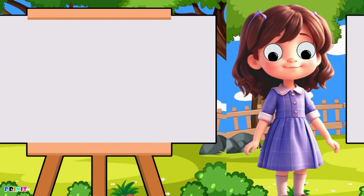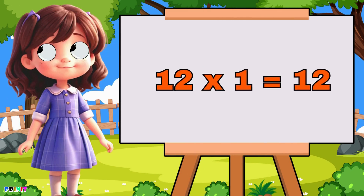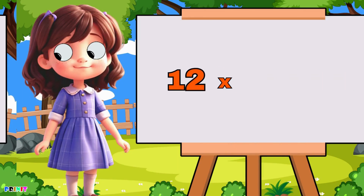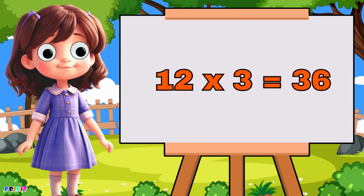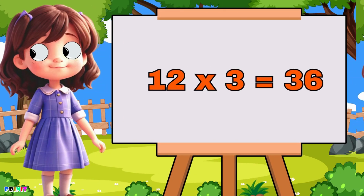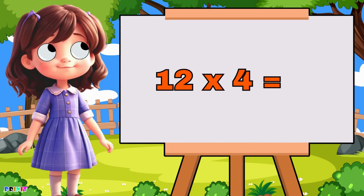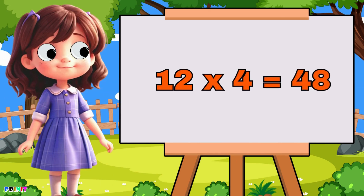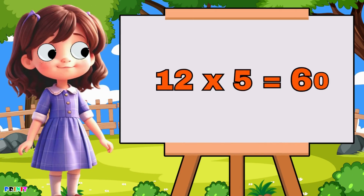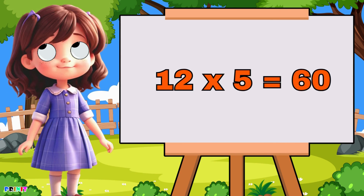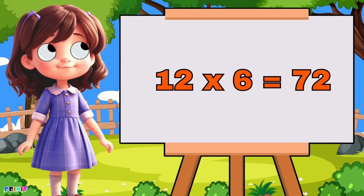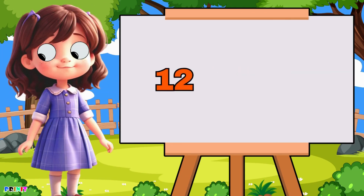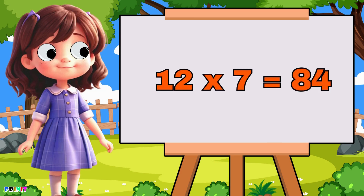Twelve one's are twelve, twelve two's are twenty-four, twelve three's are thirty-six, twelve four's are forty-eight, twelve five's are sixty, twelve six's are seventy-two, twelve seven's are eighty-four.